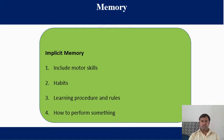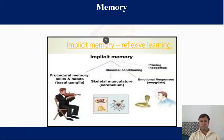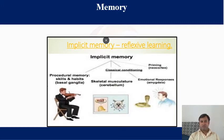Implicit memory also includes motor skills, habits, learning processes, rules, and how to perform certain things. It also includes procedural memory such as learning to play guitar, or emotional responses. The amygdala is responsible for the emotional response component of this memory. All of this is included in implicit memory.